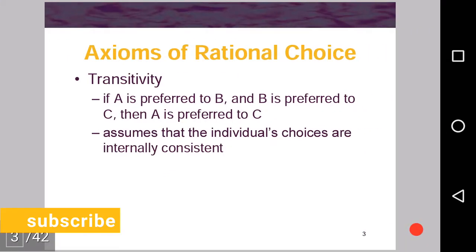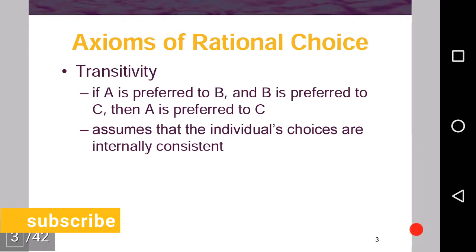Transitivity is that if we have these situations like A is preferred to B and B is preferred to C, so A should be preferred to C. Like A is more valuable than B and B is more valuable than C, then transitivity implies that A should be more valuable than C. It should not be that C is more valuable than A. We assume that the individual choices are internally consistent. This is transitivity.